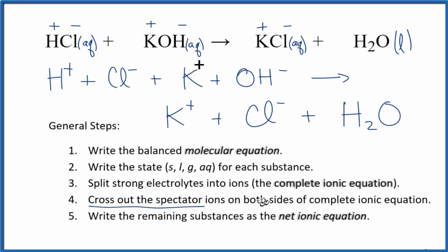Next, we'll cross out spectator ions. They're on both sides of this complete ionic equation. So we see we have Cl minus here in the reactants. We also have it in the products. We can cross that out. It hasn't changed. We have K plus here, and then in the products, K plus. Cross those out as well. And we're left with the net ionic equation.